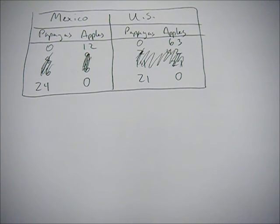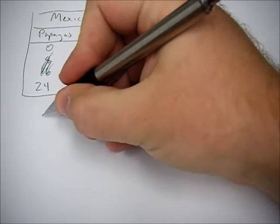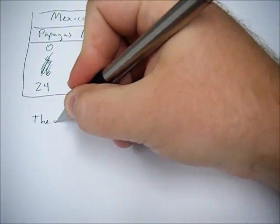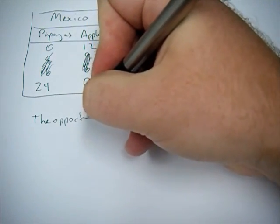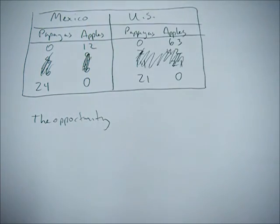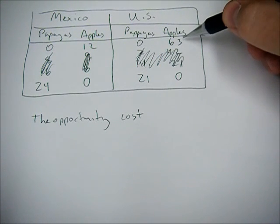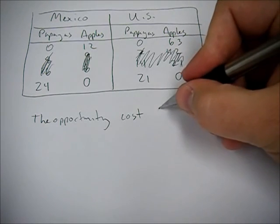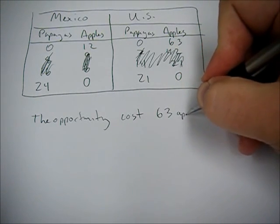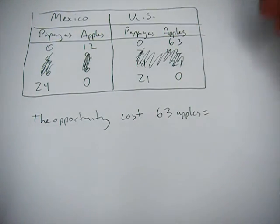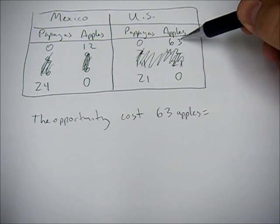Now to calculate the opportunity cost, what you have to do is start with the line: the opportunity cost, and then plug in your number.